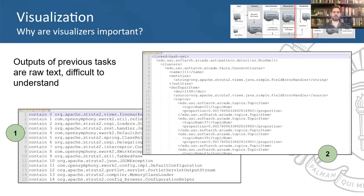The fourth task performed by Arcade is visualization. The previous tasks generally output raw or structured text, which is not human-friendly. On the left side, for example, we have a clusters.rsf file, and to the right, a smells.scr file, which is a type of XML.